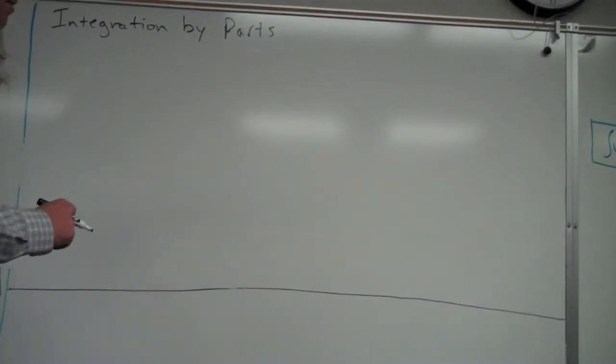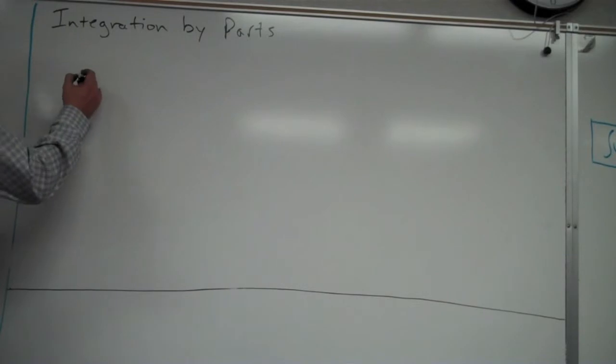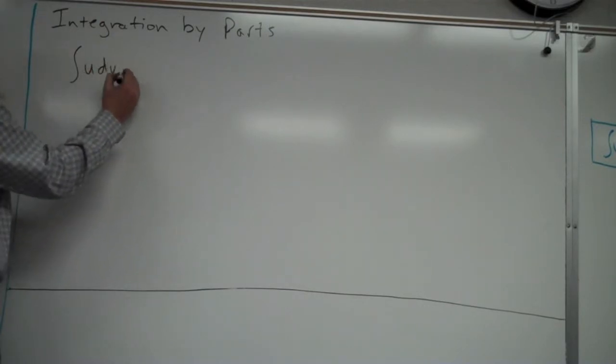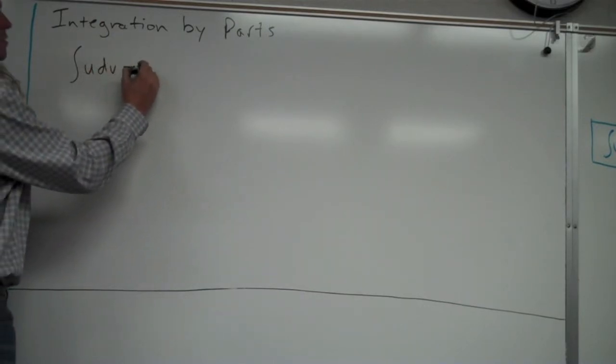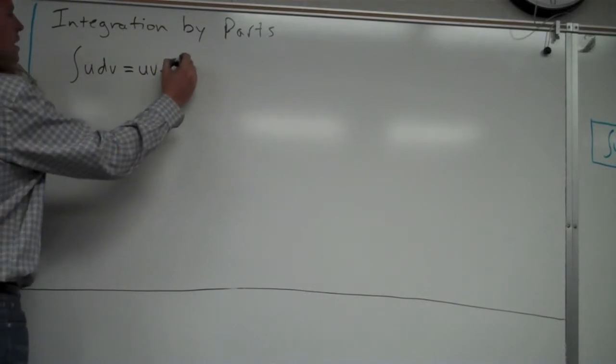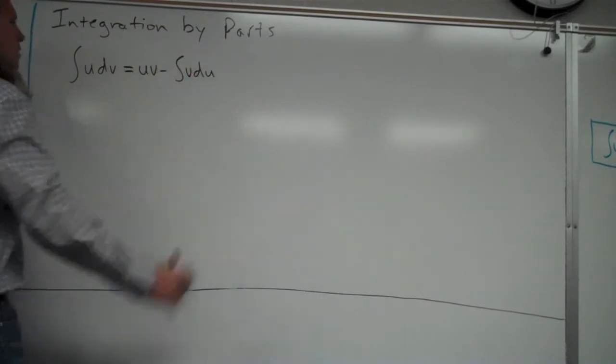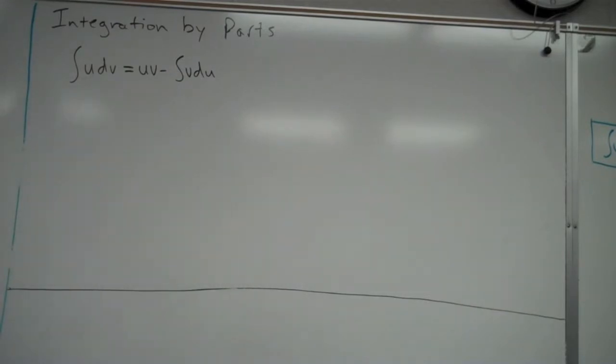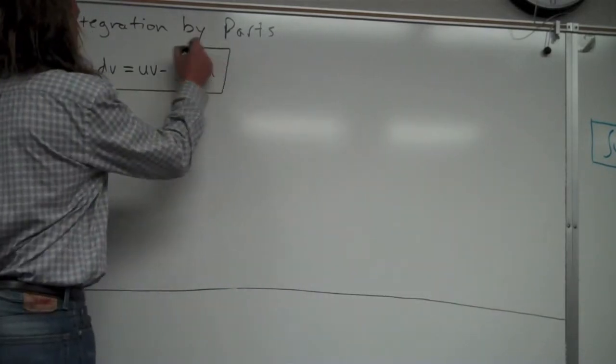Okay, we're going to take a look at integration by parts here. There's a formula for integration by parts, which I'm not going to go over how to come up with that, but just really how to use it. Integral of u dv is equal to uv minus the integral of v du. So that is the formula that you need to know for integration by parts. It's very important that you have that down.